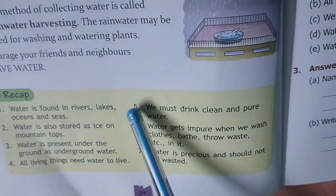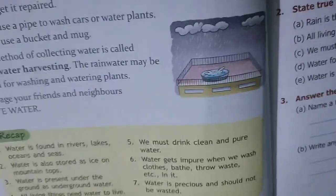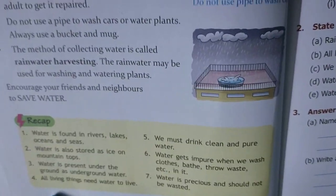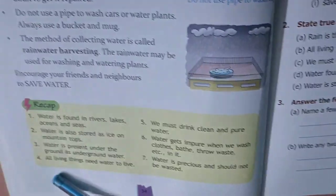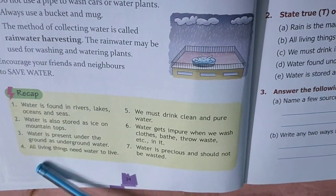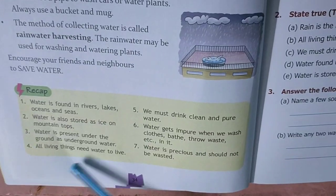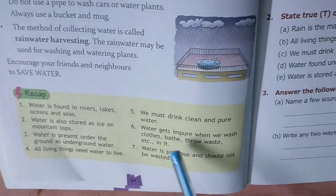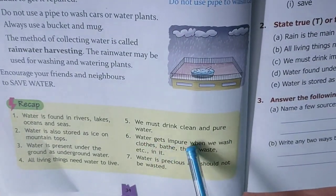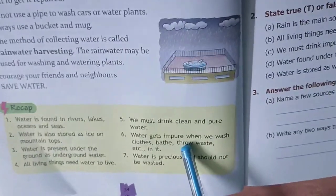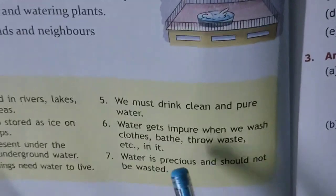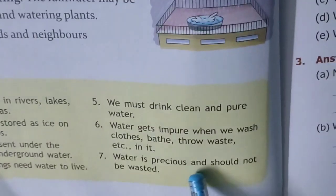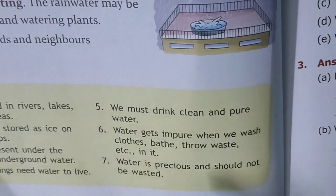Recap: Water is found in rivers, lakes, oceans and seas. Water is also stored as ice on mountain tops. Water is present under the ground as underground water. All living things need water to live. We must drink clean and pure water. Water gets impure when we wash clothes, bathe, or throw waste in it. Water is precious and should not be wasted. Thank you.